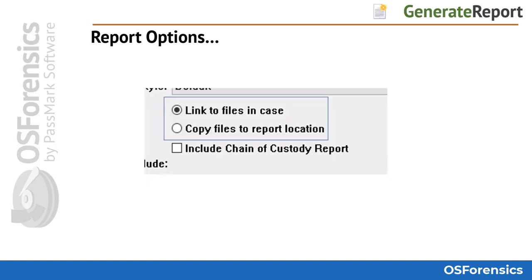Pay special attention to these two options. The Link to Files in Case option will create a report where the files included will not be viewable on any computer other than the one where the case directory resides. If you plan on distributing your report to a third party via DVD, Blu-ray, or USB device, you will want to choose the Copy Files to Report location so that the evidence files themselves will also be included in the report directory, allowing the hyperlinks to work correctly.